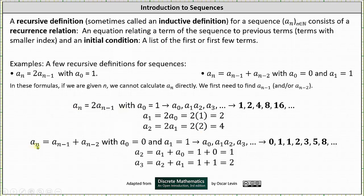For the second recursive definition, a sub n equals a sub (n minus one) plus a sub (n minus two) with a sub zero equals zero and a sub one equals one: notice we are given the first two terms because we need two previous terms to find the next. To find a sub two, when n equals two, a sub two equals a sub one plus a sub zero, which is one plus zero, or one. To find a sub three, a sub three equals a sub two plus a sub one, which is one plus one, or two. You may want to pause the video and verify you can generate these terms from the recursive definitions.